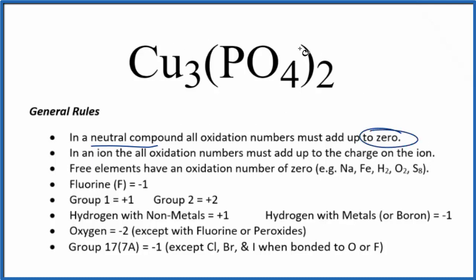To solve this, we really need to recognize that PO4, this is the phosphate ion, it has a three minus ionic charge. So when we have an ion here, all the oxidation numbers must add up to the charge on the ion.